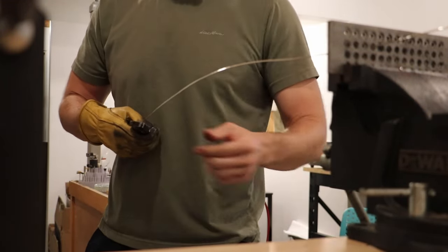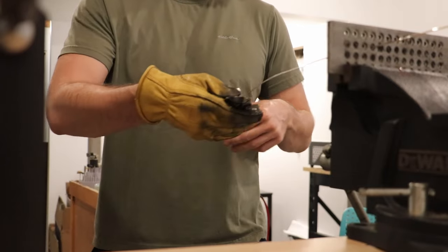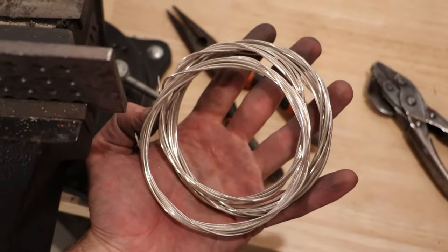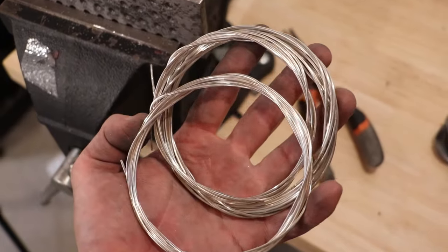This makes each bracelet unique. You might see imperfections, but that's part of the charm. It means your bracelet isn't like anyone else's. It's special.